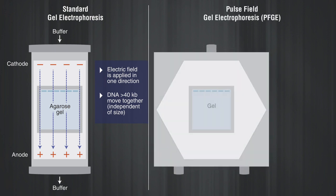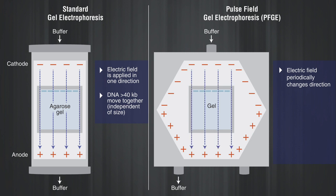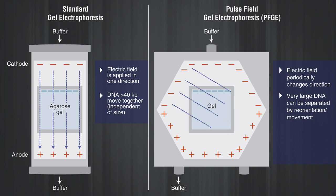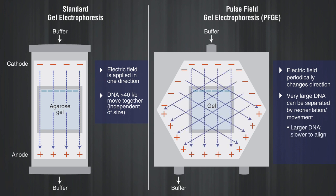In contrast, PFGE applies an electric field that periodically changes direction. By introducing an alternating voltage gradient on a PFGE system, very large DNA fragments can be separated by their reorientation and movement at different speeds through the gel. Larger pieces of DNA are slower to align their charge to the change in direction, while smaller pieces are quicker to align, resulting in greater separation.